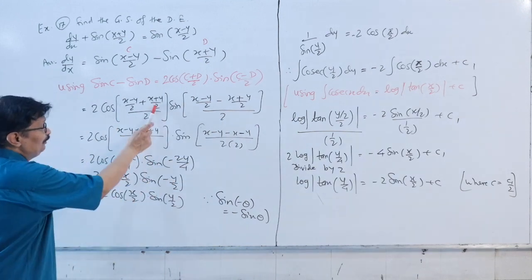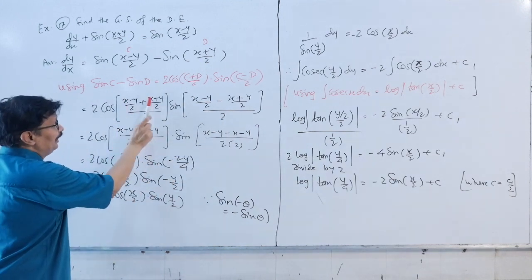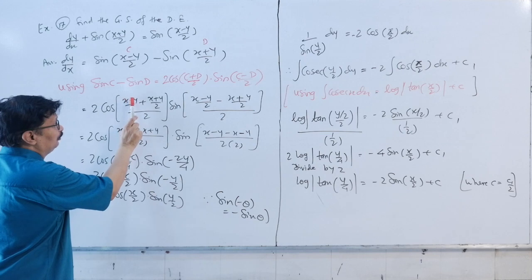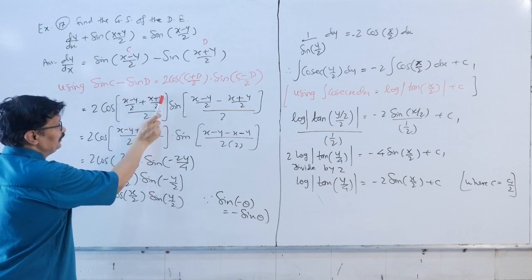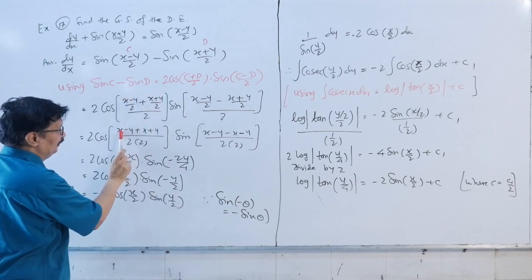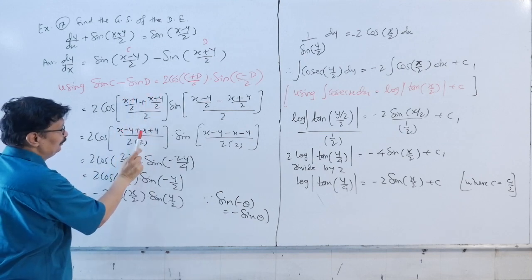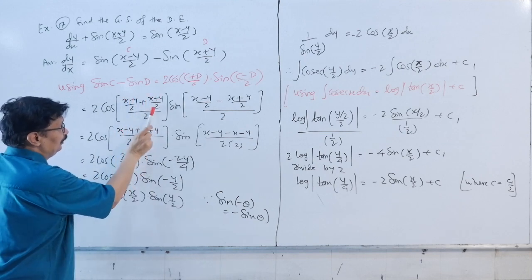Taking LCM of 2, the numerator adds up: (x - y) + (x + y) = 2x, so the cos term simplifies to cos(x/2). The sin term gives minus y, simplifying to sin(-y/2).